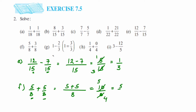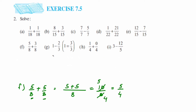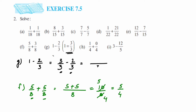Next we have problem g. Here they have given that 1 equals 3 upon 3. So in place of 1 we'll write down 3 upon 3, because 3 by 3 cancels to give 1. This makes it a like fraction so we can solve it. The question is 1 minus 2 by 3. Substituting 1 as 3 by 3, we get 3 by 3 minus 2 by 3. The denominators are the same — write 3 in the denominator and subtract: 3 minus 2 is 1, so the answer is 1 by 3.